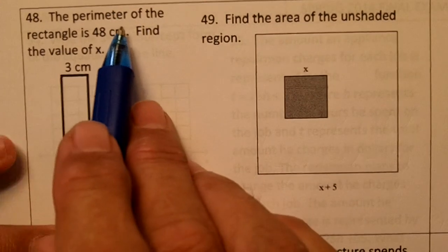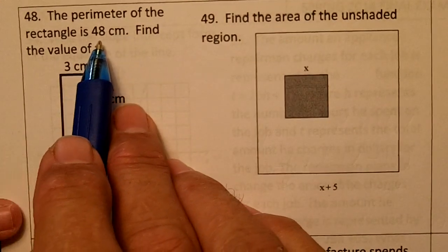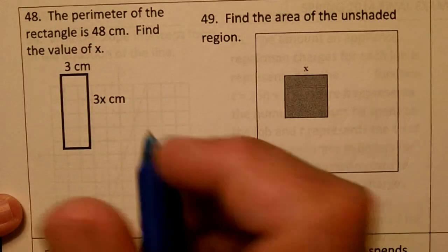Number 48. The perimeter of the rectangle is 48 centimeters. Find the value of x.